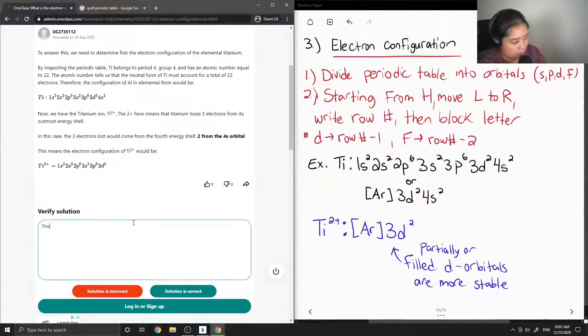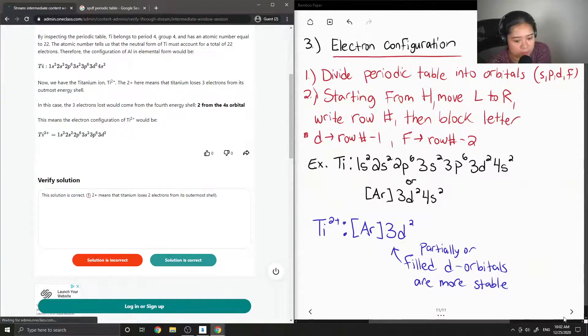Yep, so this solution is correct. And then I'll just put in brackets to fix the typos. Titanium 2 plus means that titanium loses two electrons. Okay, so on to question number...